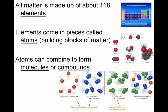All matter is made up of about 118 elements. This changes really every year as they discover more elements — that's why we have the space on the periodic table that's UUN and UUM; those are the ones still being discovered. Elements come in pieces called atoms, so atoms are the building blocks of matter. We can go smaller with protons, neutrons, and electrons, but in terms of building blocks of matter, the atom is the smallest.